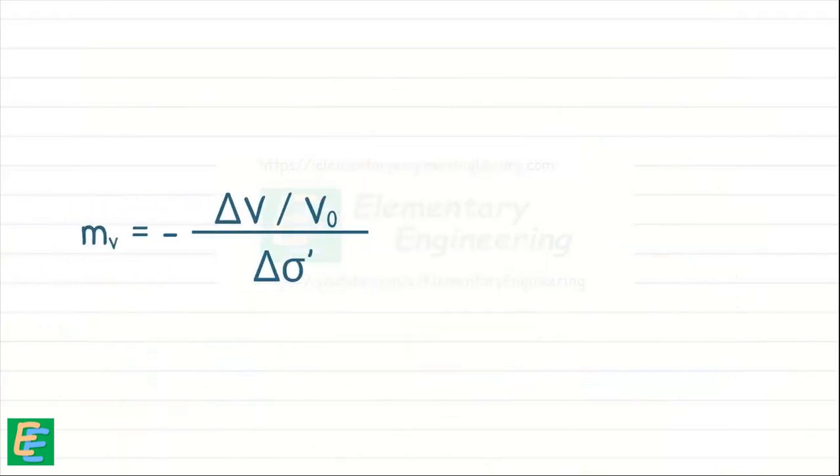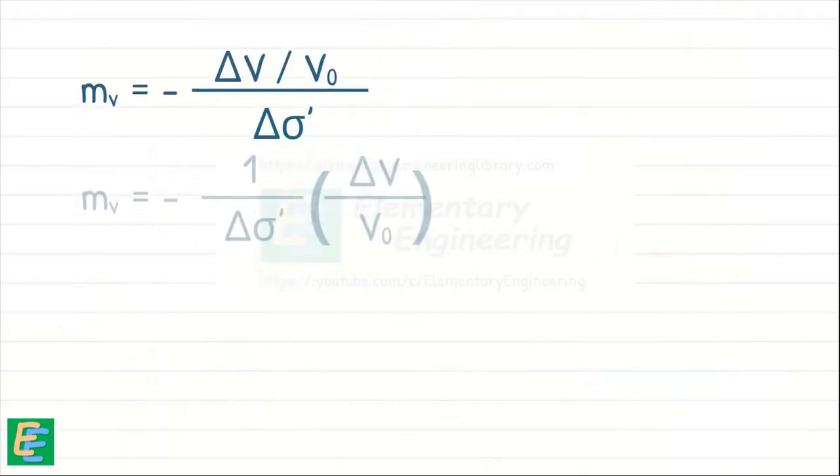In coefficient of volume compressibility, the term delta V by V0 is called volumetric strain. Now let's rewrite the equation in different words.